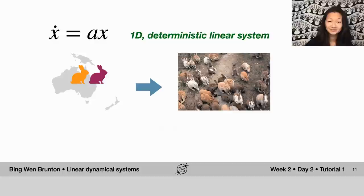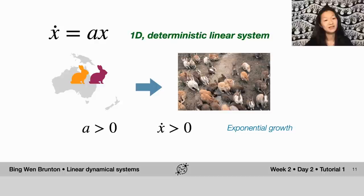You wait a long time, and what happens is that you get an island full of bunny rabbits. So in this case, a is larger than zero, right? Because you have bunny rabbits, they make more bunny rabbits, which means x dot is greater than zero. And the result of that is that you end up with exponential growth.